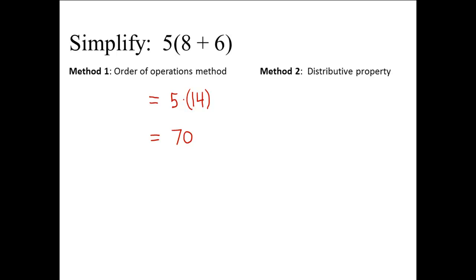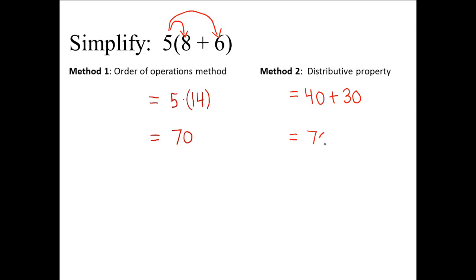Now we will use the distributive property. We multiply 5 times 8, and 5 times 8 is 40, plus we do 5 times 6, and 5 times 6 is 30. And 40 plus 30 equals 70 also.